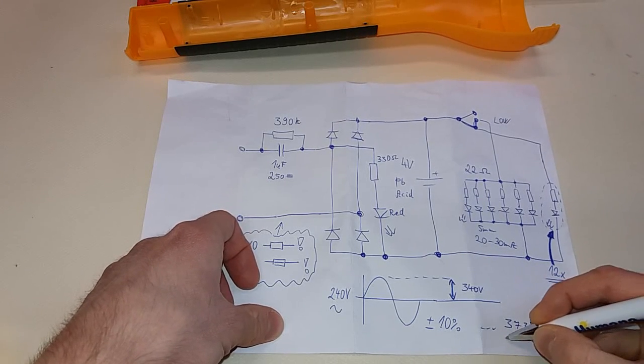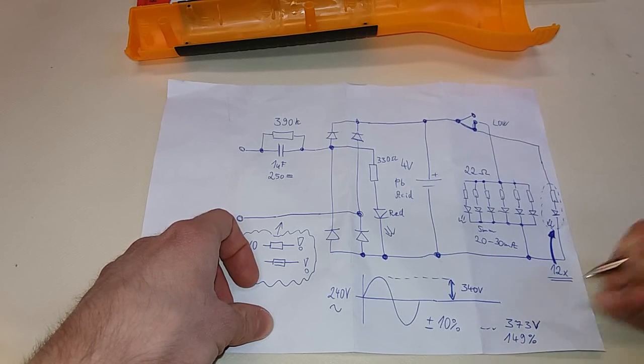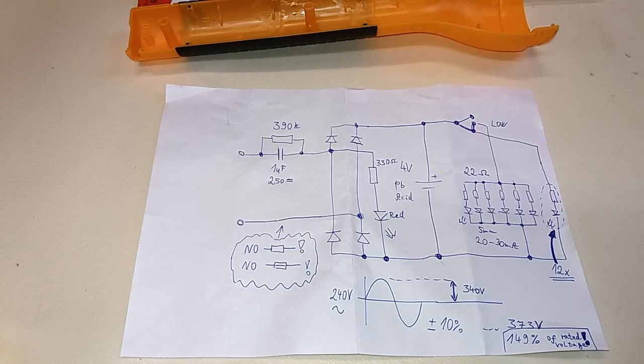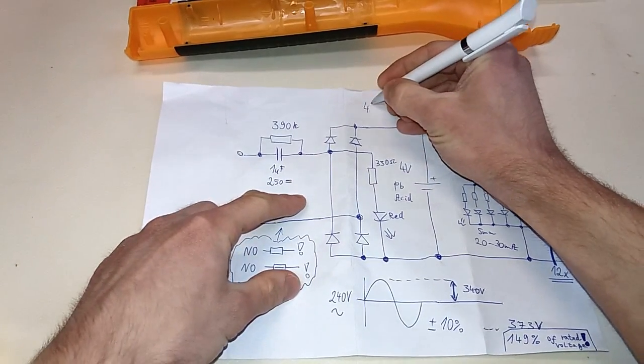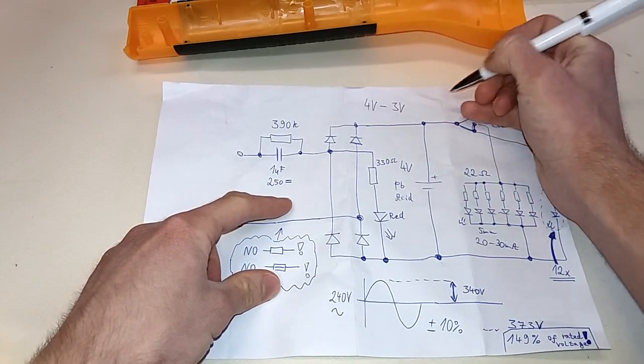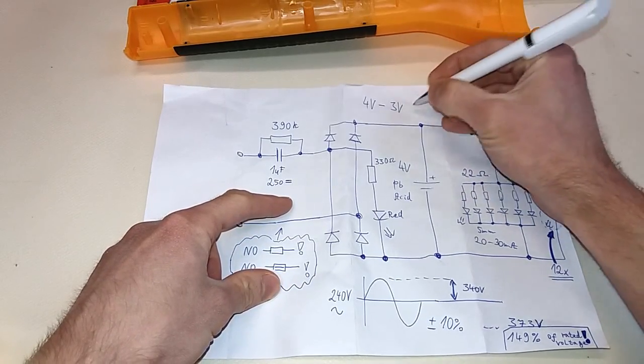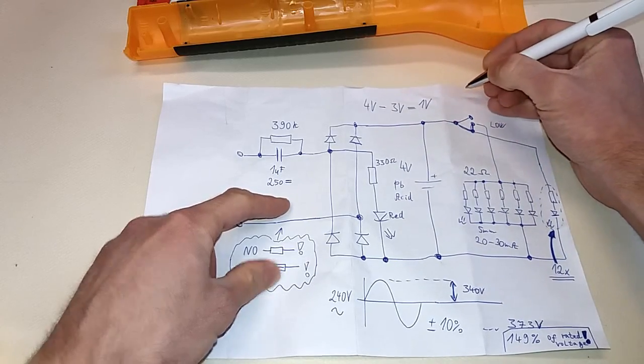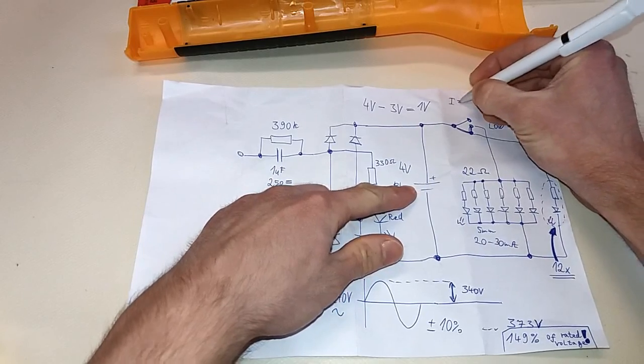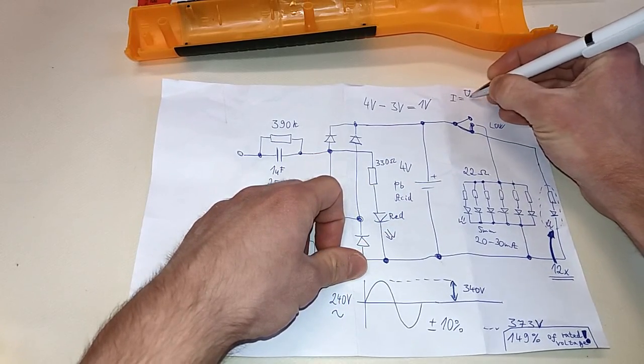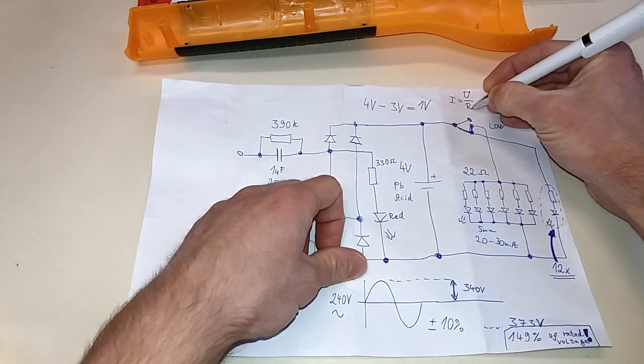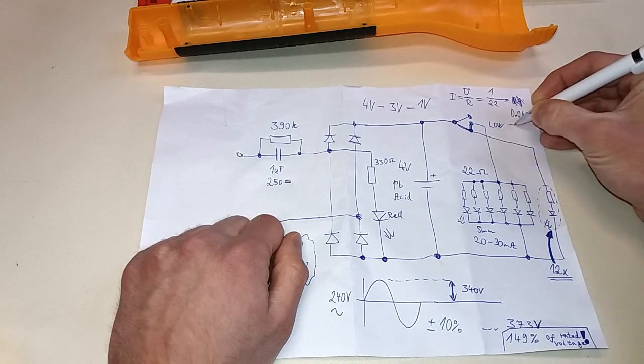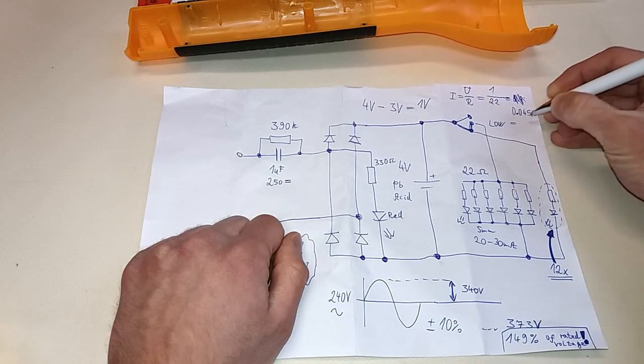The problem is the current in those LEDs. You have four volt battery minus three volts across those LEDs, and it gives you one volt over those resistors. And the current would be voltage divided by resistance: 0.045 amps, and that's 45 milliamps - about twice the current.